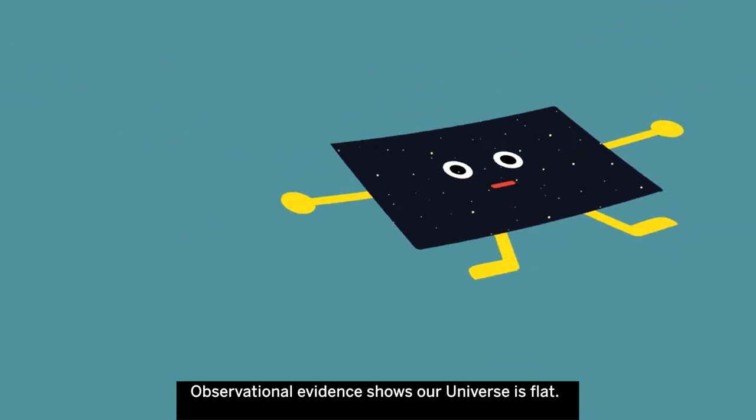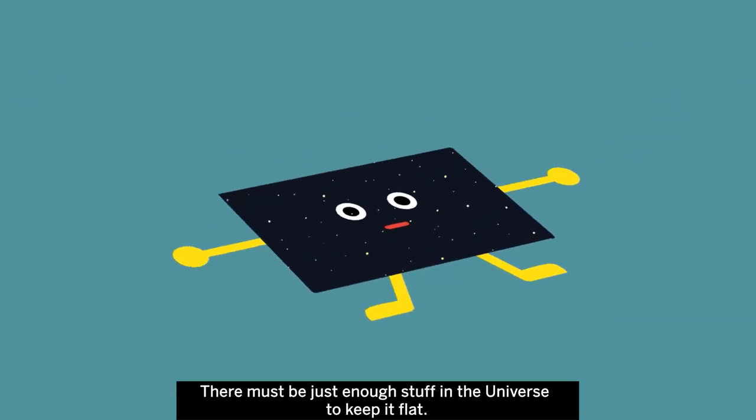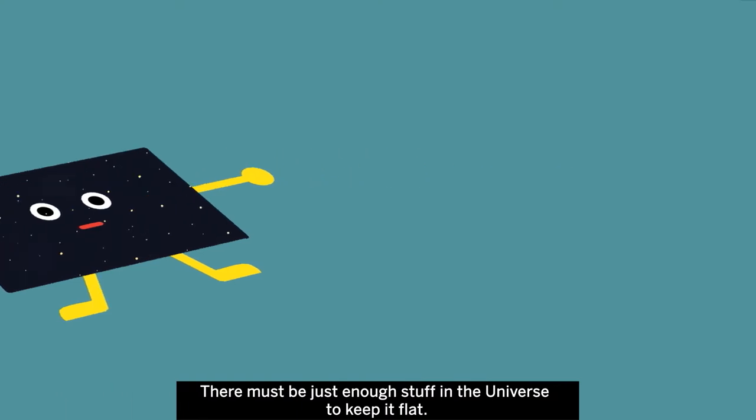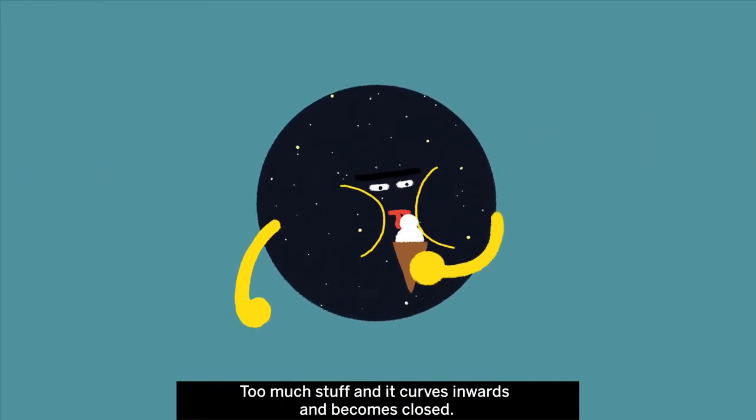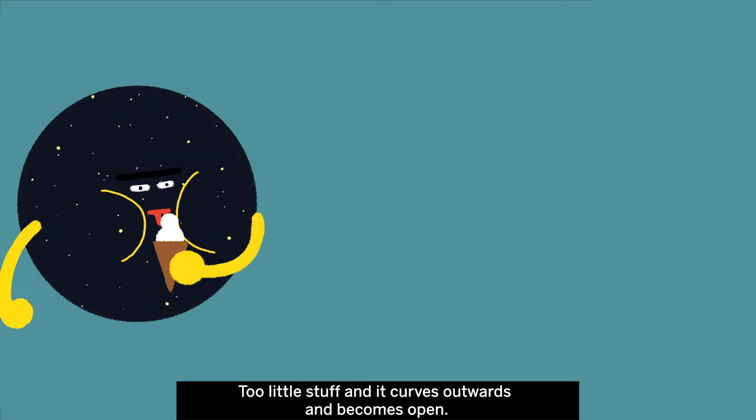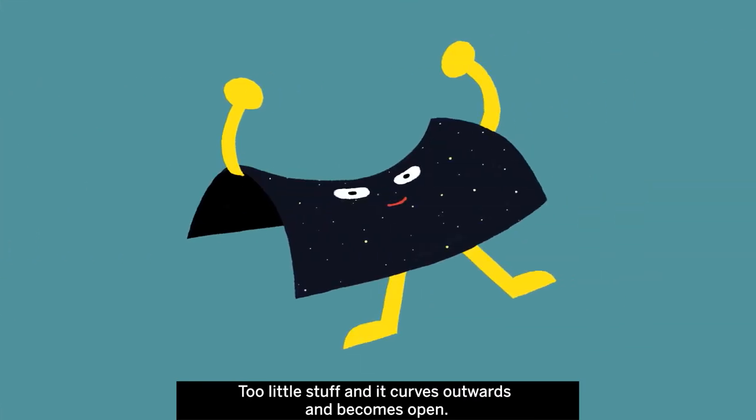Observational evidence shows our universe is flat. There must be just enough stuff in the universe to keep it flat. Too much stuff, and it curves inwards and becomes closed. Too little stuff, and it curves outwards and becomes open.